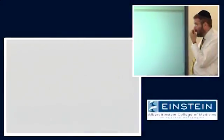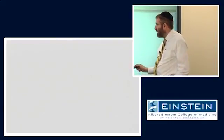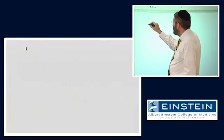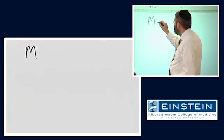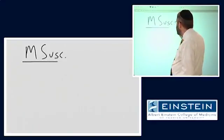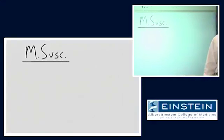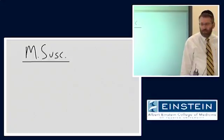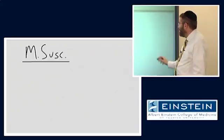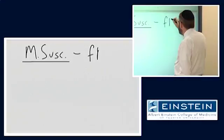The next thing I want to mention is another way to exploit this idea of magnetic susceptibility, again to get some physiologic information out of our images. And this is what we typically call functional MRI.